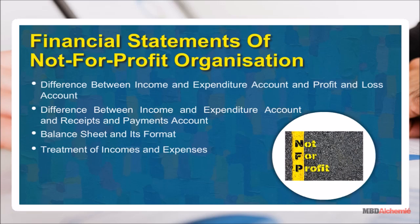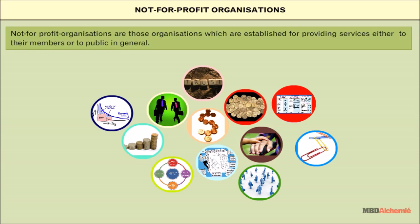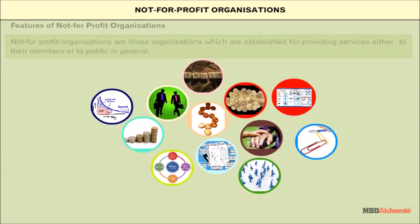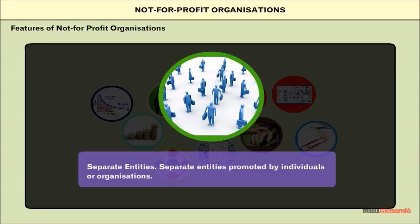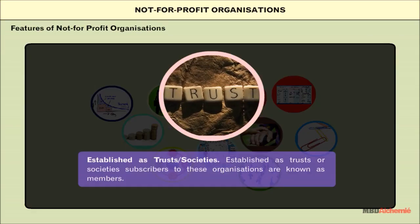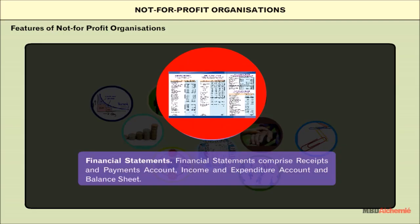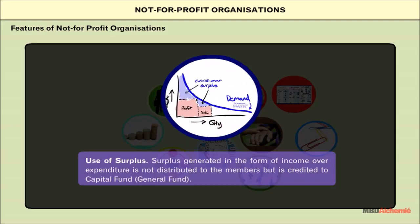Not-for-profit organizations are established for providing services either to their members or to the general public. Features of not-for-profit organizations: these organizations are separate entities, they provide services, are established as trusts, managed by committees, sourced by donations, and they maintain financial statements with specific treatment of surplus.